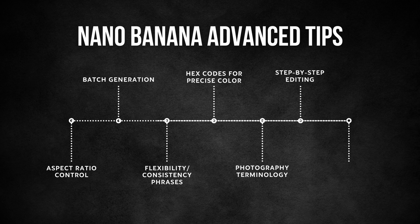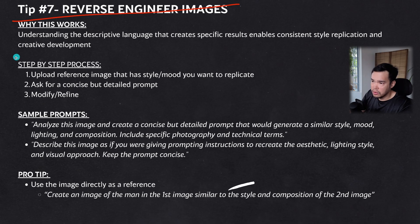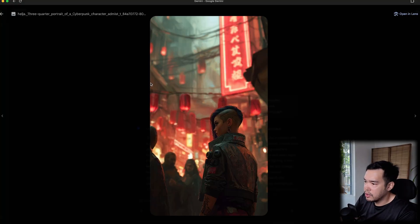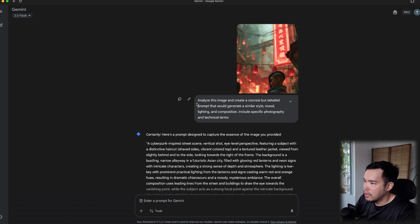Multi-step editing is great, but what if you want to recreate a specific image you saw online but don't know where to start? That's tip 7: reverse engineering images. Upload a reference image with the style and mood you want to replicate, then ask Nano Banana for a concise but detailed prompt describing that image. Refine the prompt it gives you.